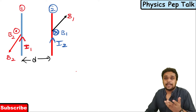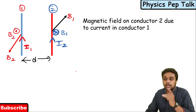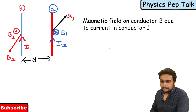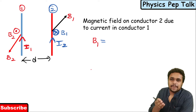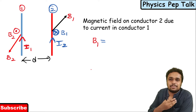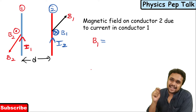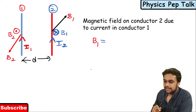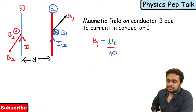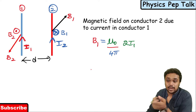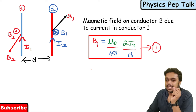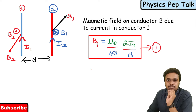We shall look at what the magnetic field on conductor 2 is, due to the current flowing in conductor 1. The magnetic field B1 will be equal to μ0/4π × 2I1/D, where D is the distance of separation. I call this Equation 1. This is the magnetic field produced by conductor 1.